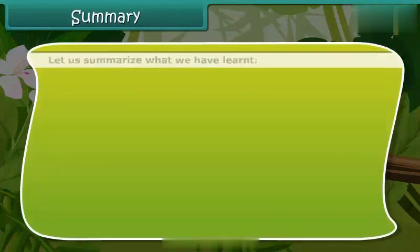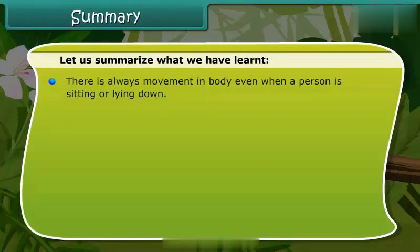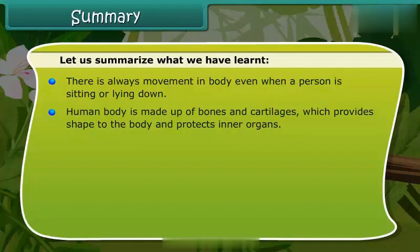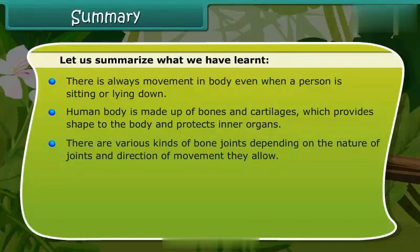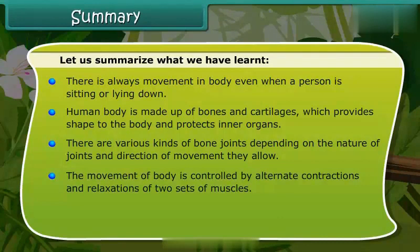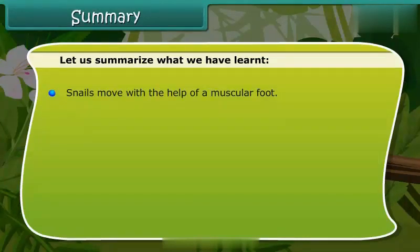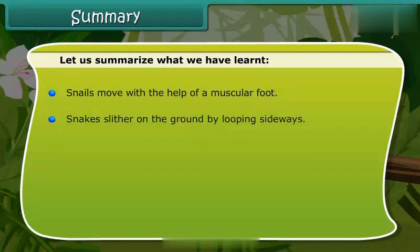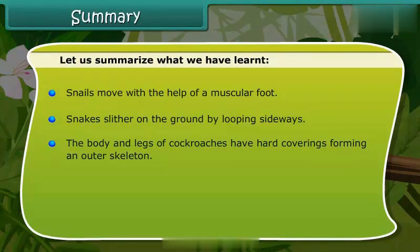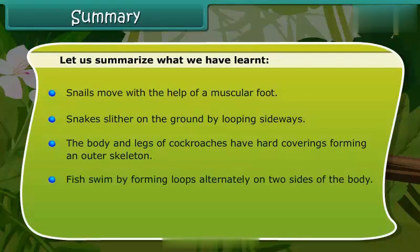Let us summarize what we have learnt. There is always movement in the body even when a person is sitting or lying down. The human body is made up of bones and cartilage, which provide shape and protect inner organs. There are various kinds of bone joints depending on the nature and direction of movement they allow. The movement of the body is controlled by alternate contractions and relaxations of two sets of muscles. Earthworms move by alternate extensions and contractions using muscles; snails move with the help of a muscular foot; snakes slither by looping sideways; cockroach bodies and legs have hard outer coverings forming an exoskeleton; fish swim by forming loops alternately on two sides of the body; and birds fly with the help of strong muscles and light bones.